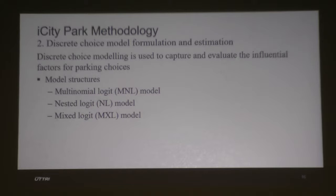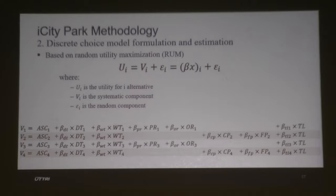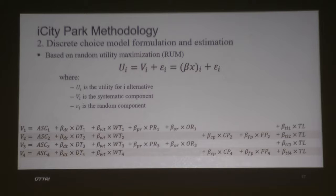Discrete choice modeling is used to capture and evaluate influential factors for parking choices. Three types of models are developed: multinomial logit, nested logit, and mixed logit. The utility functions are based on random utility maximization theory. The systematic utility functions for all four alternatives include driving time, walking time, and parking time frame. For legal parking alternatives (one and three), they include parking cost and occupancy rate. For illegal parking alternatives (two and four), they include citation probability and fine price.